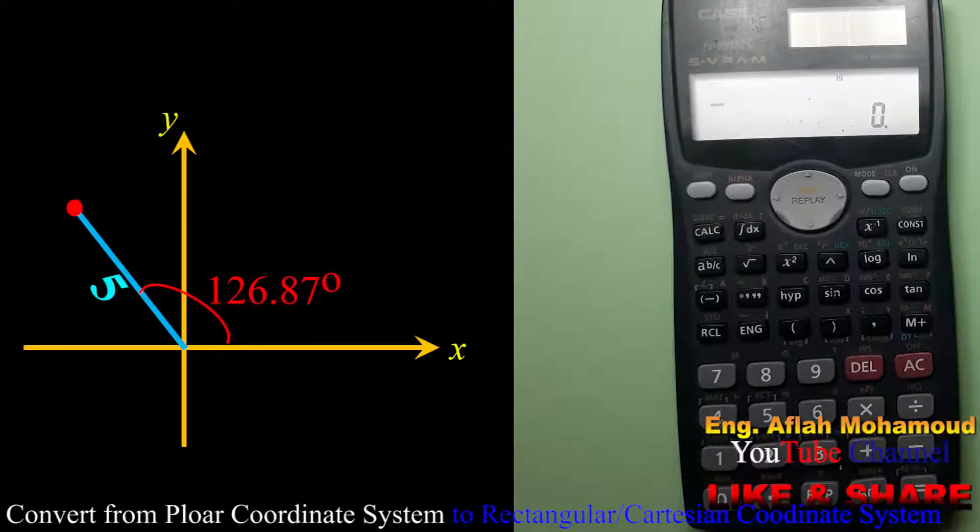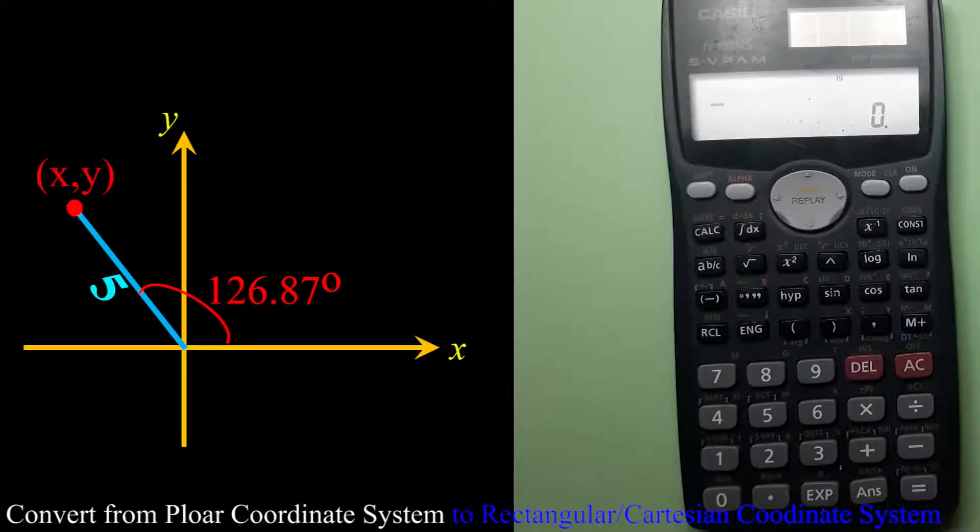So I have this question here. I want to know the coordinate of this point in the rectangular form X and Y. Let me enter the distance from here up to here, that is 5, and the angle from the positive X axis to here, it is equal to 126.87.